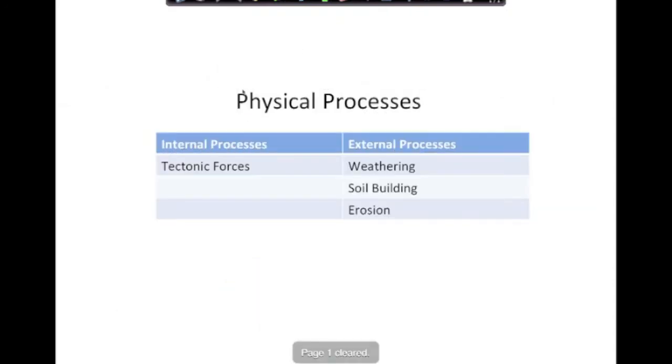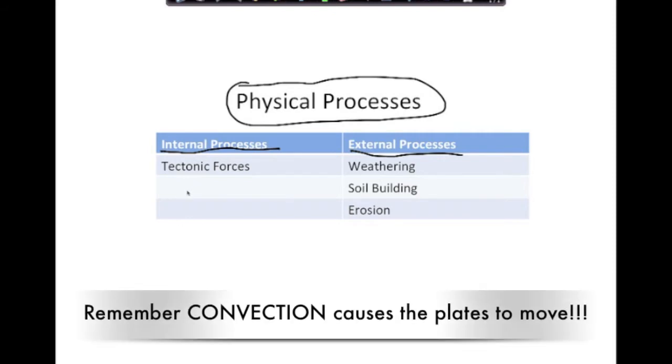Continuing on with our test review, we're going to go on with physical processes. In physical processes, this is very simple. We have two types of processes: internal and external. Internal meaning what's going on inside the Earth. There's only one type of internal process, it's tectonic forces. We have a couple types of tectonic forces. There's this, where two tectonic plates come together, and that is convergent. There is this, when two tectonic plates move apart, and that is divergent.